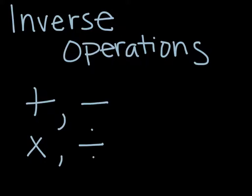When you perform the same inverse operation on each side of an equation, you obtain what's called an equivalent equation.